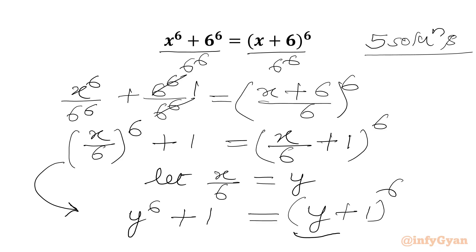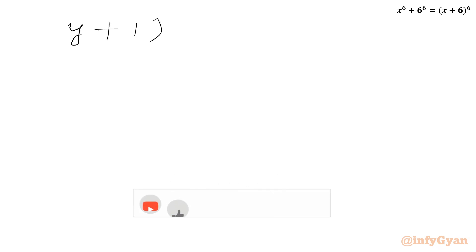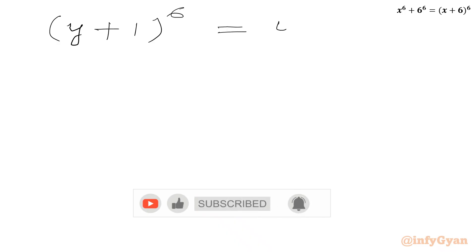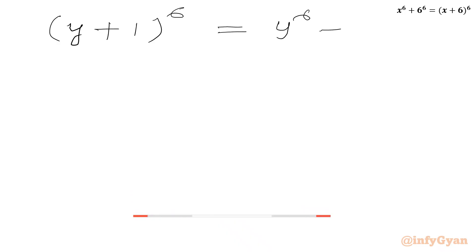Now we can use the binomial expansion of y plus 1 whole power 6. So y plus 1 whole power 6 equals y power 6 plus 1, plus the remaining terms from the expansion.